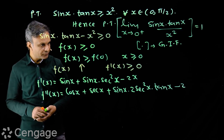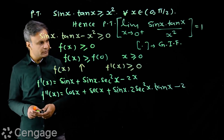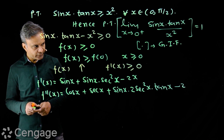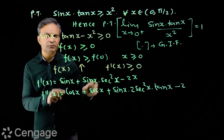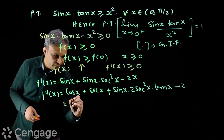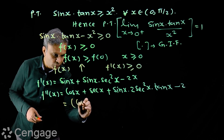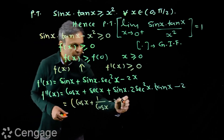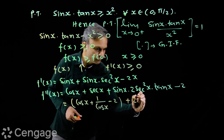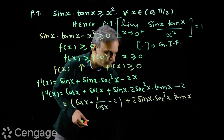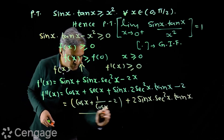We have this long expression — what can we say about its sign? We can group the terms properly. We group: cos x + 1/cos x minus 2, and separately we have 2 sin x · sec²x · tan x. What can we say about this expression?